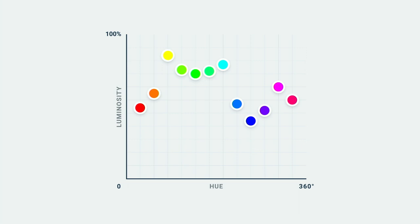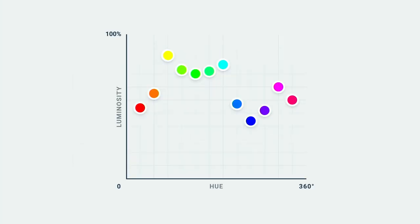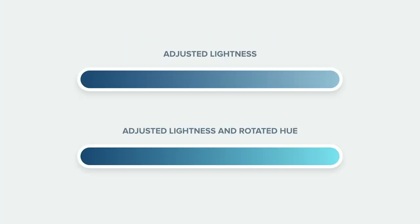So how does all this help us? Normally when you want to change how light a color looks, you can simply adjust the lightness value. While this does work to lighten or darken the color, you often lose some of the color's intensity. Since different hues have a different perceived brightness, you can also change the brightness of a color by rotating the hue to the nearest bright color. Because the background we're using is blue, we're going to rotate the hue to the nearest bright color — cyan in this case. This is a pretty nifty trick to create sexy-looking gradients, but it also works great when you're working with light text on colored backgrounds.